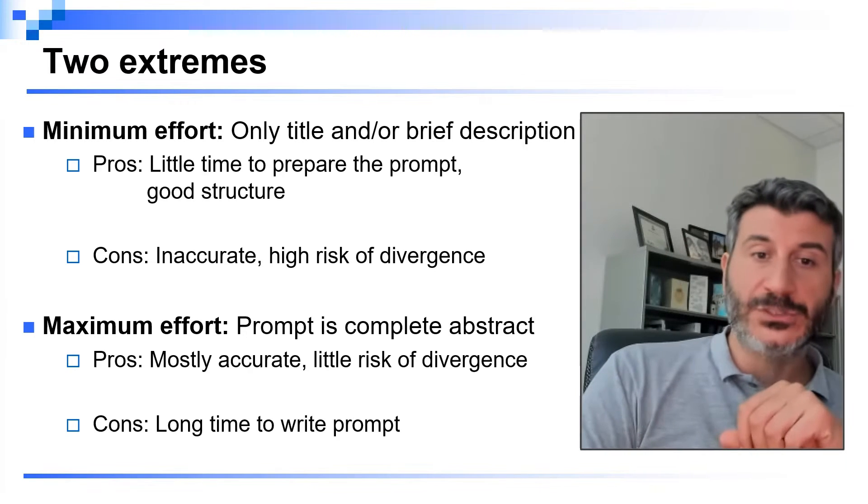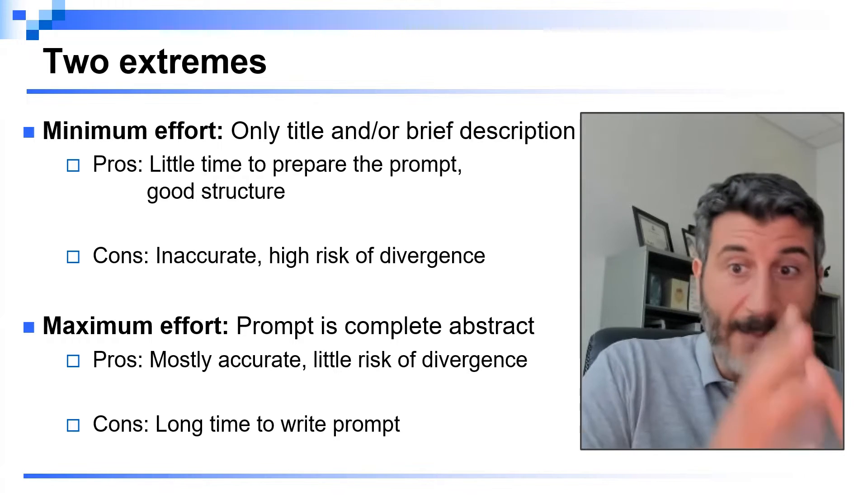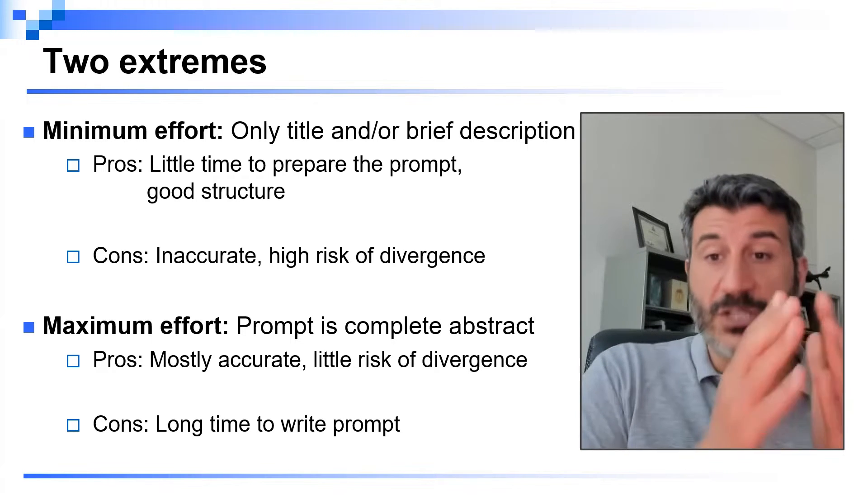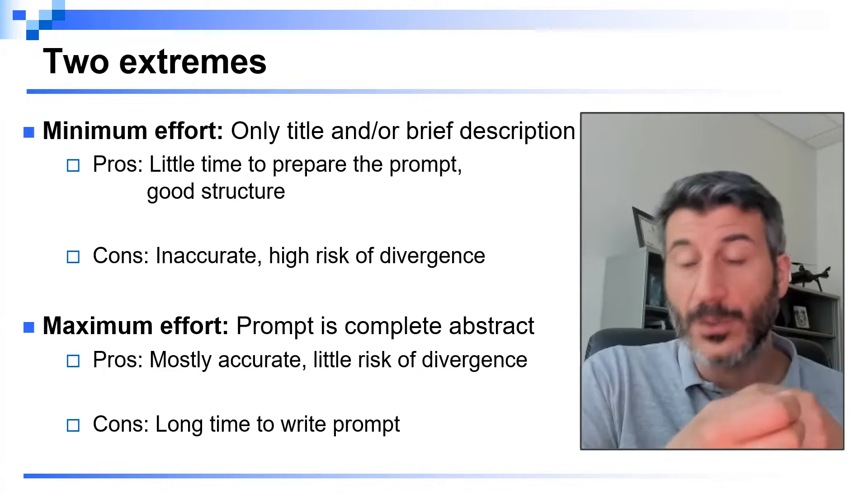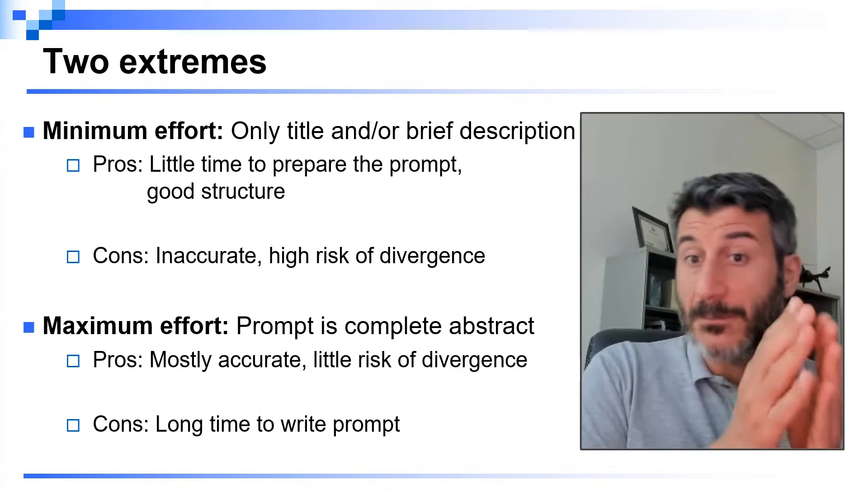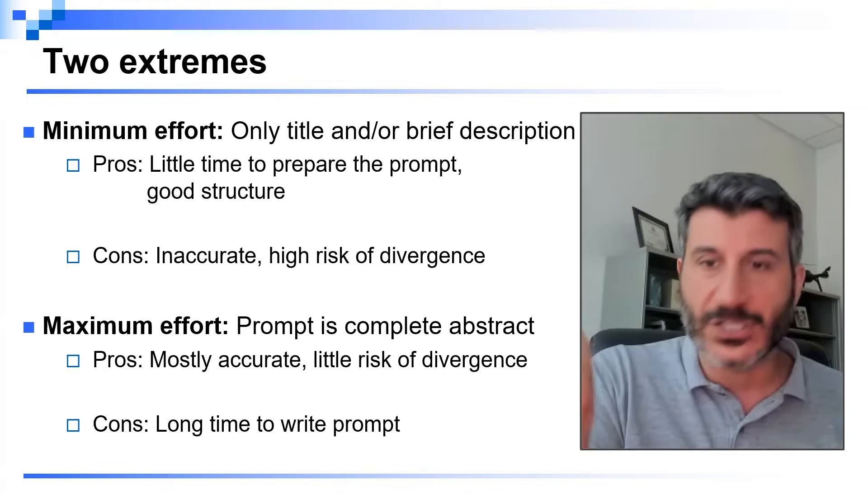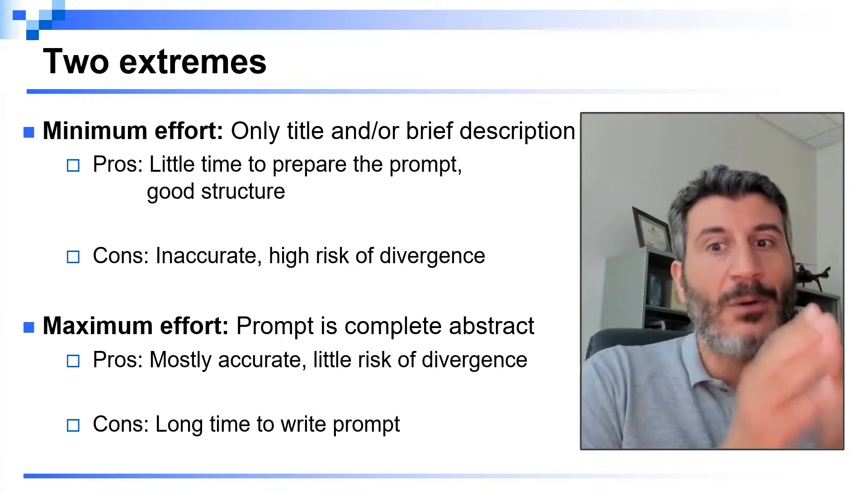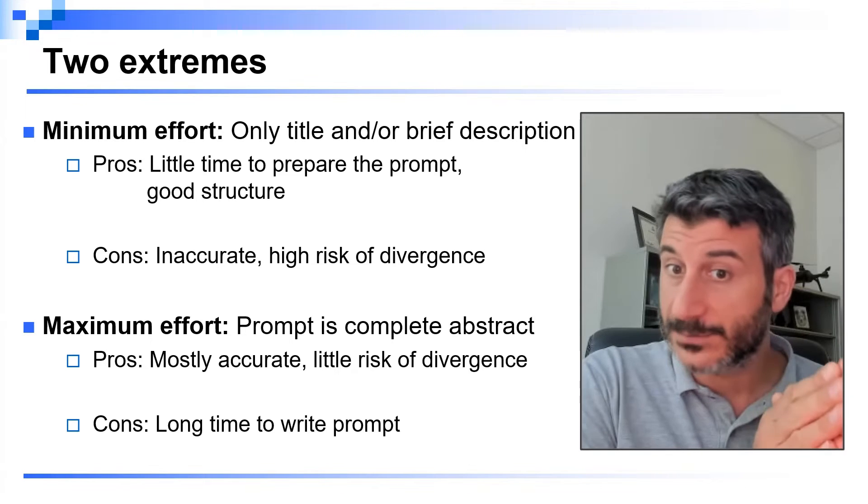The other approach is the one of maximum effort, in which you write the entire abstract, and then you give it to ChatGPT in order to refine it, provide some edits, improve the flow, improve the grammar, etc. Here, clearly, it's going to be much more accurate. There is very little risk that ChatGPT is going to diverge in directions that do not reflect the content of your paper. However, it took you a very long time in order to write the prompt.